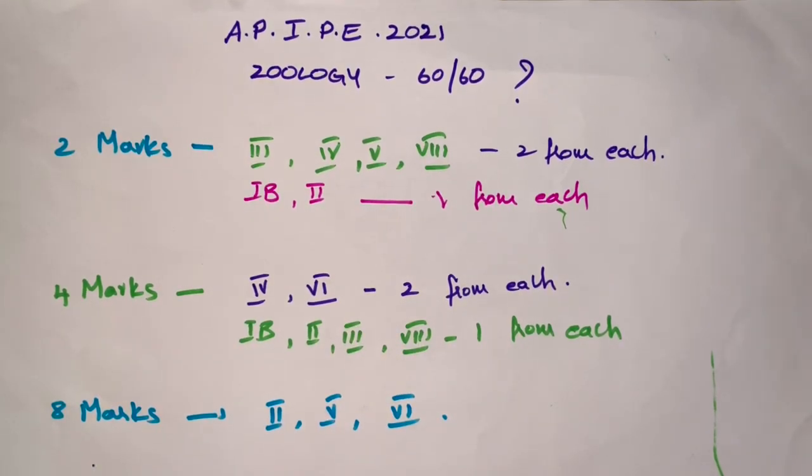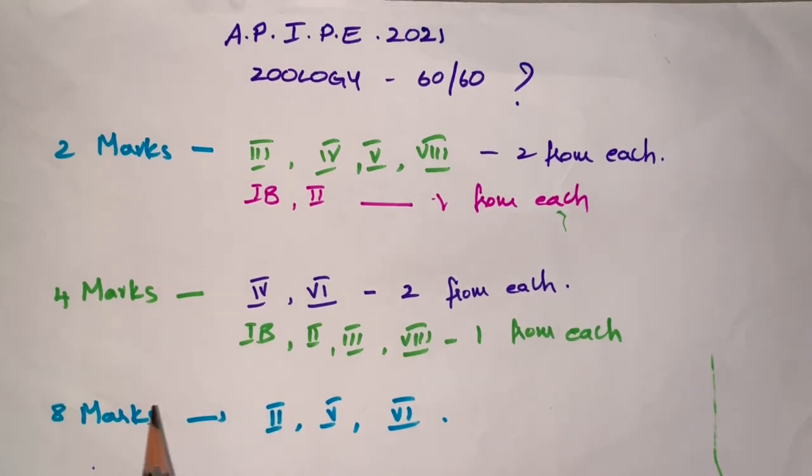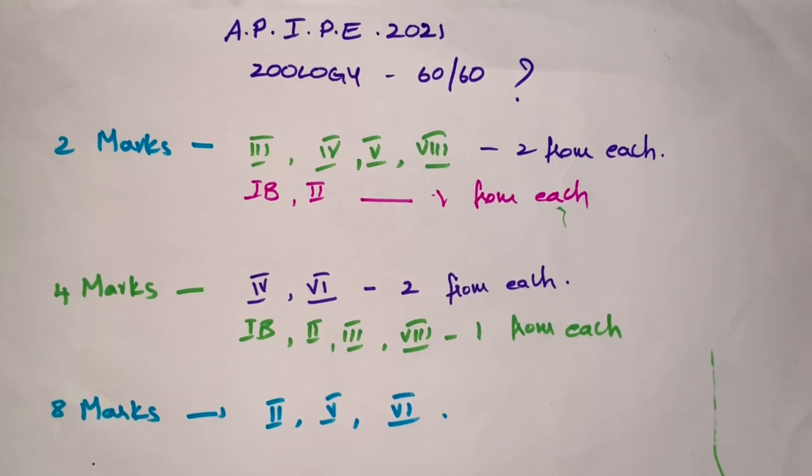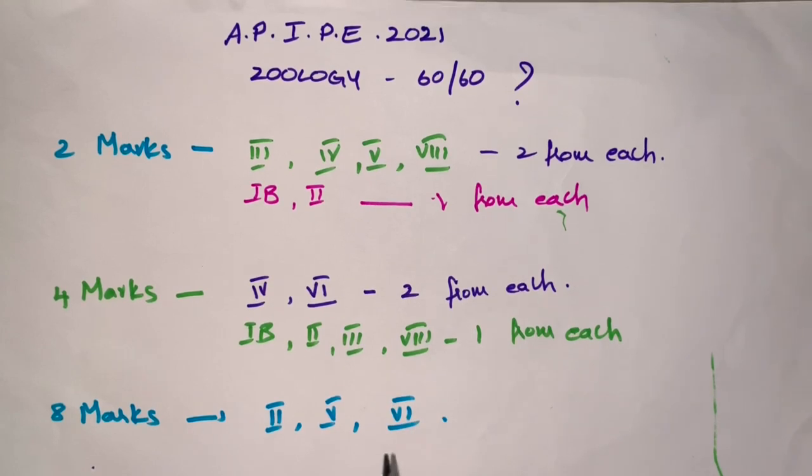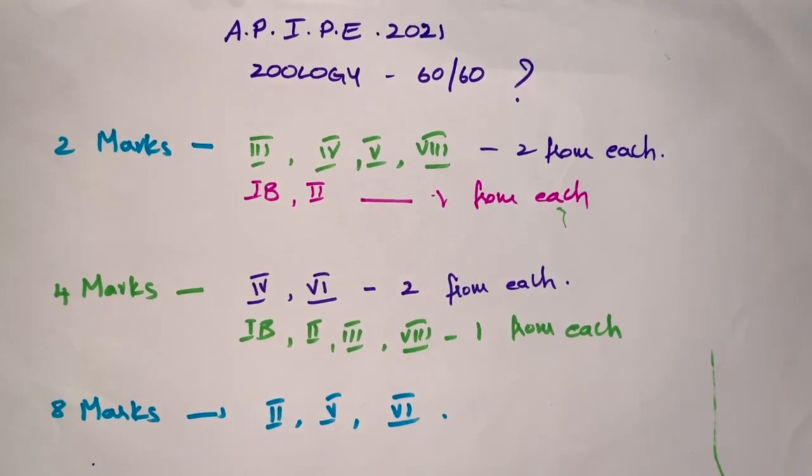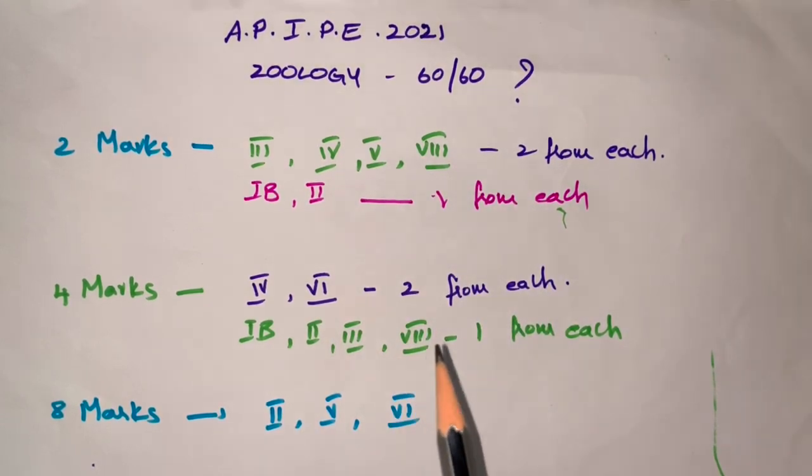Next, coming to eight marks questions. Eight marks questions come from the second unit, fifth unit, and sixth unit. If you prepare any two from these three, you can answer eight marks questions easily. The genetics chapter is very important because from genetics you will get 16 marks. To get 60 out of 60 in zoology, there is no shortcut except hard work, but the hard work should be smarter.